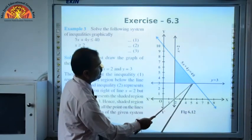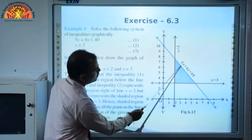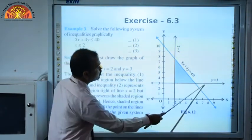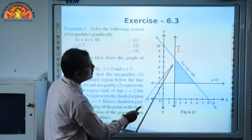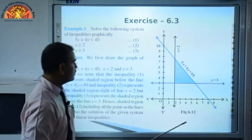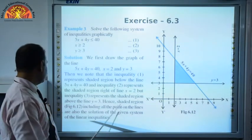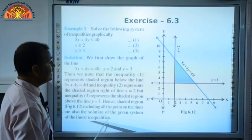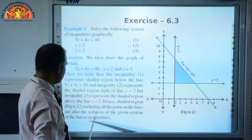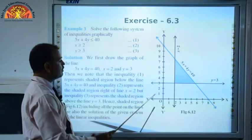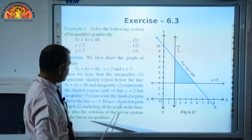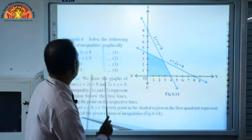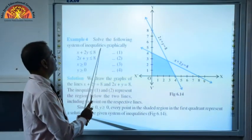The region satisfying all three inequalities is the solution region. To summarize: the first inequality is true at origin so we shade the origin side; y = 3 is false so we shade above; x = 2 is false so we shade to the right. Therefore, the shaded region including all points on the lines is the solution of the given system of linear inequalities.